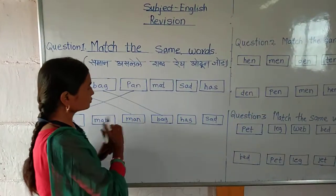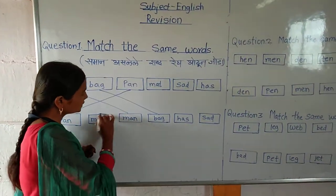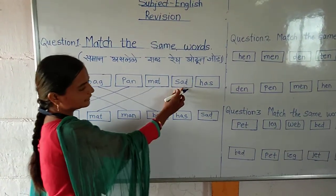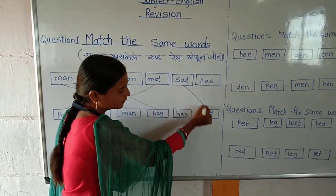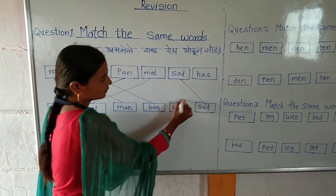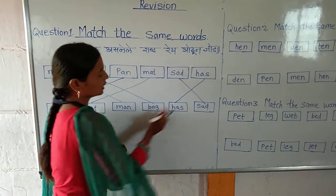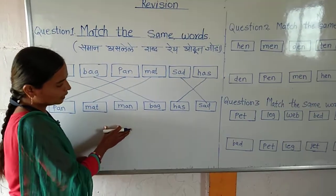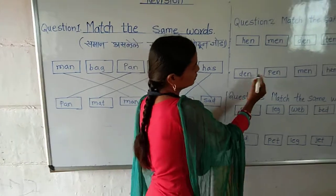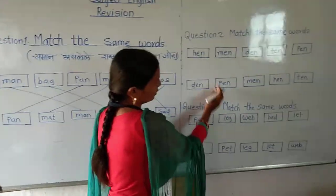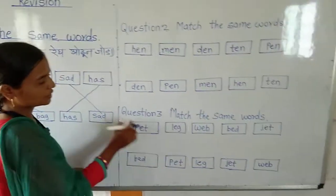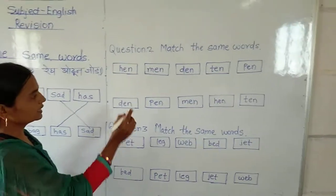Then mat. Here is the mat word. Then saak — saak. Has. Like this way you have to match these two questions.